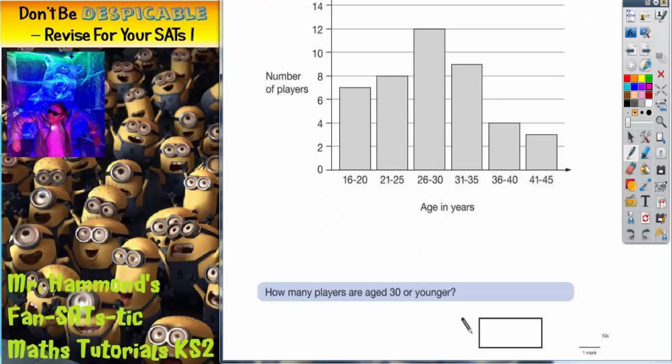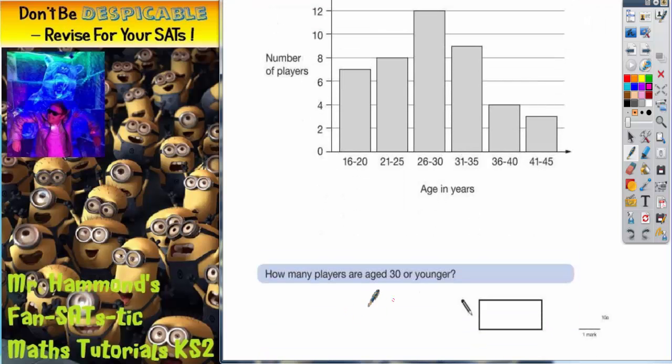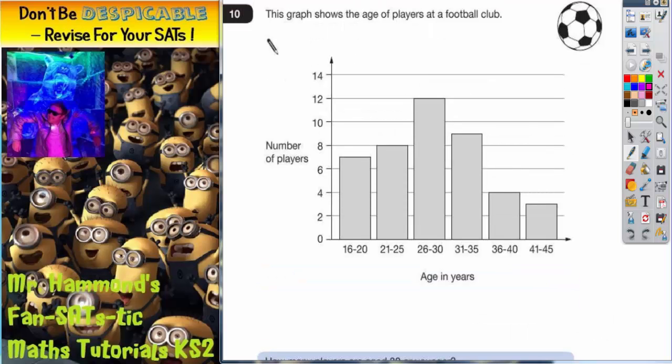Let's have a look at what we've got to do. How many players are aged 30 or younger? Well, this bar is 30 or younger, so we're interested in that one. This bar is 30 or younger, so we want that one. This bar takes us up to 30, and it's younger as well, so we want that one. But these three bars are older than 30, so we're not interested in those bars.